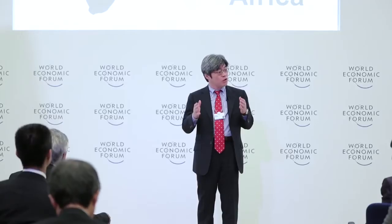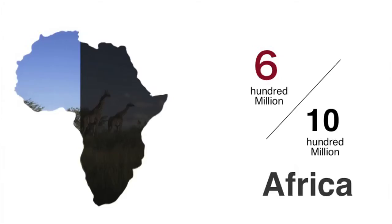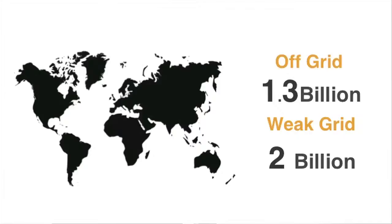Today, we take electricity for granted like air. However, in large parts of the world, broad off-grid areas still exist. 60% of Africans have no access to electricity, while 22% of Asia's population still lives in off-grid areas.